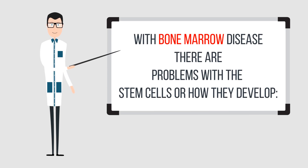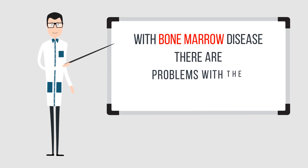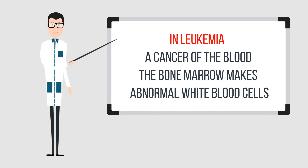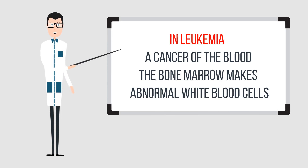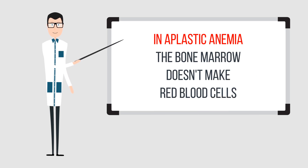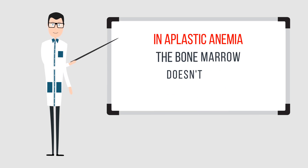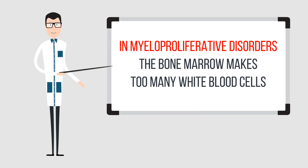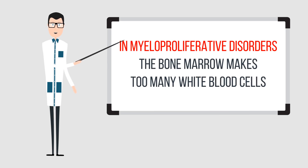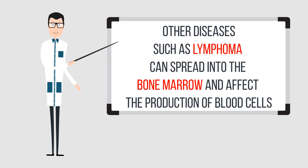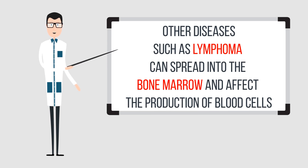With bone marrow disease, there are problems with the stem cells or how they develop. In leukemia, a cancer of the blood, the bone marrow makes abnormal white blood cells. In aplastic anaemia, the bone marrow doesn't make red blood cells. In myeloproliferative disorders, the bone marrow makes too many white blood cells. Other diseases such as lymphoma can spread to the bone marrow and affect the production of blood cells.